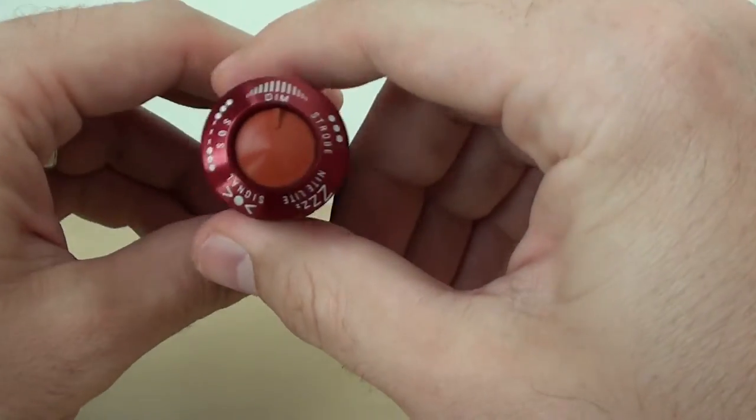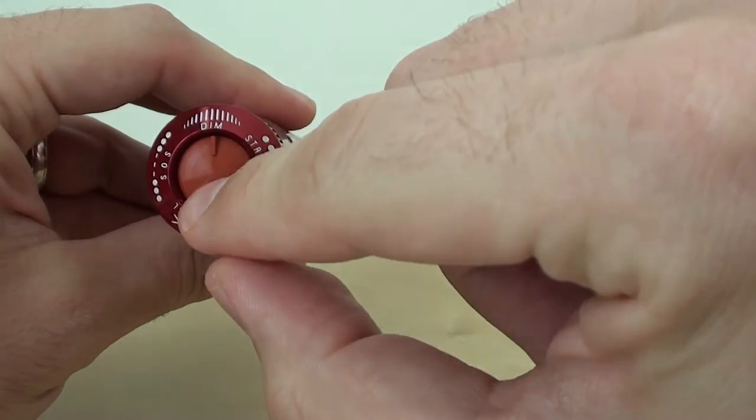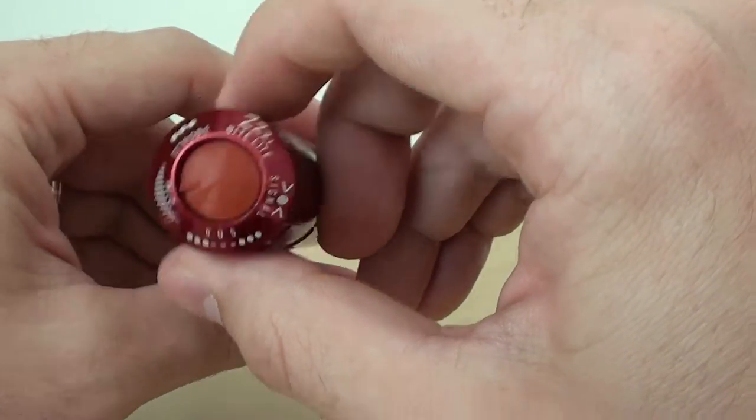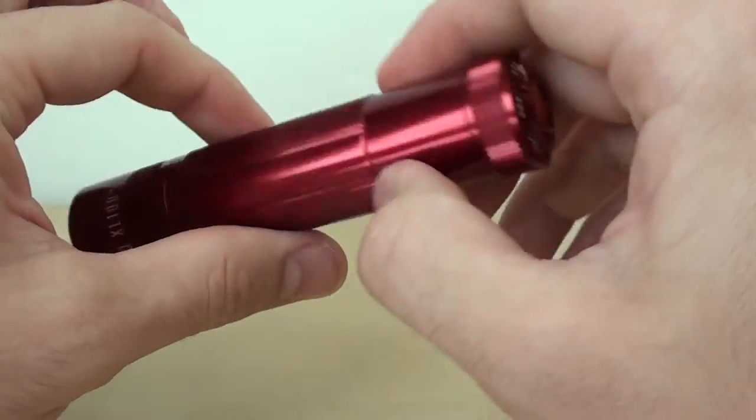So everything is controlled through that button in the back here. And according to how you hold it, the function will be activated. So if you hold it in this function, the dim function will be activated.